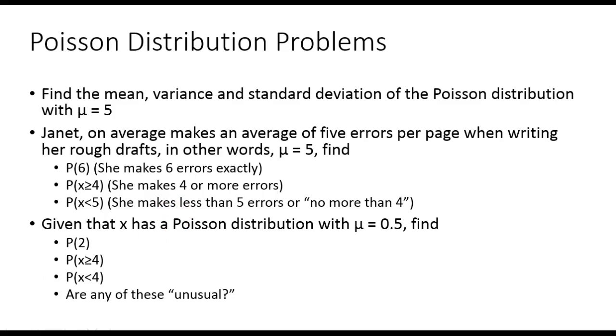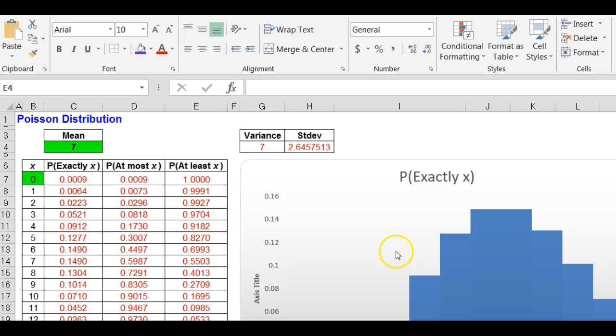First of all, I'm going to show you my Poisson distribution calculator. You will notice that my Poisson distribution calculator looks very similar to my binomial. However, I only have to input one number, and that number is the mean. So you put it in, it does the rest.